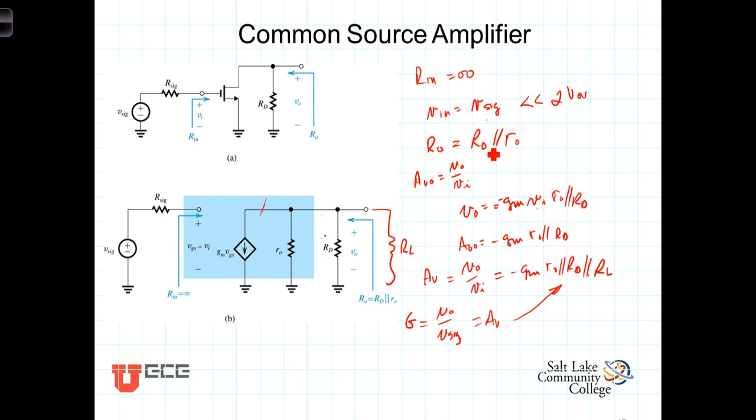We're going to see that later on when we look at the common drain, the common drain amplifier has a small output resistance and is frequently used as a buffering amplifier for the common source.